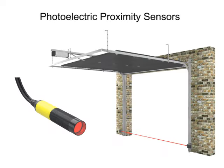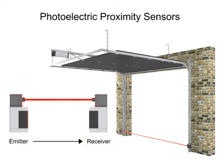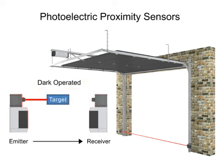Photoelectric sensors have the greatest detection range, from 1 mm to 25 meters or more. They operate by the use of an emitter which transmits a beam of light to the receiver. When the light is normally being received, it is known as dark-operated mode. When the absence of light is required, it is known as light-operated mode.